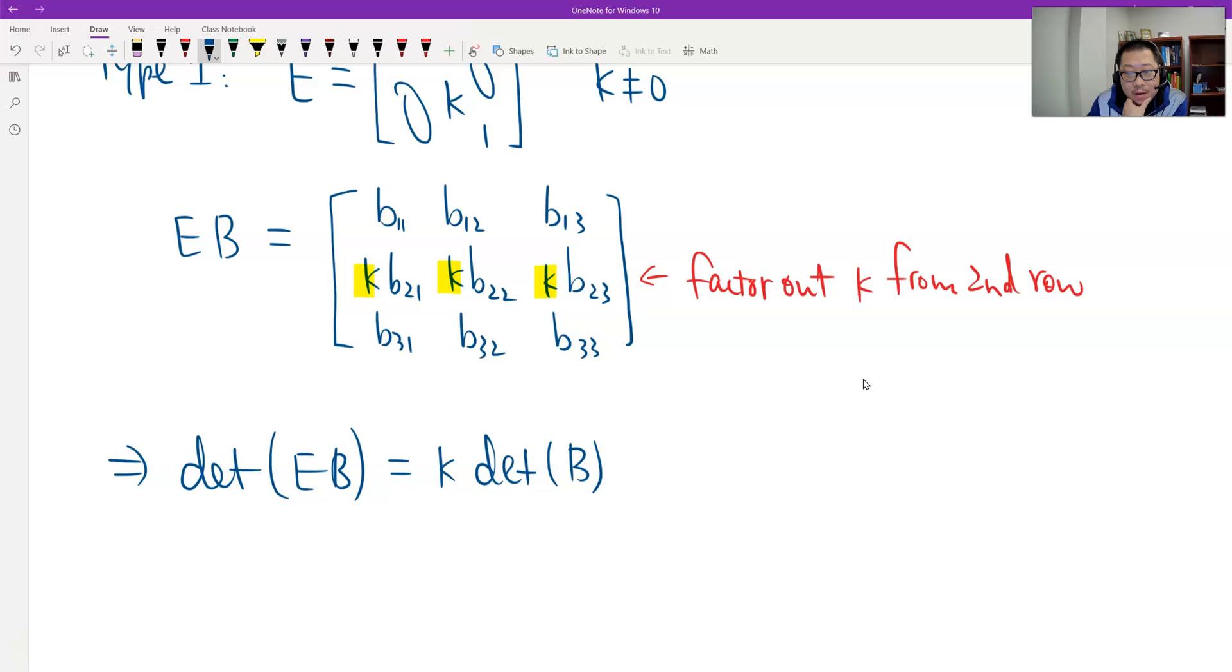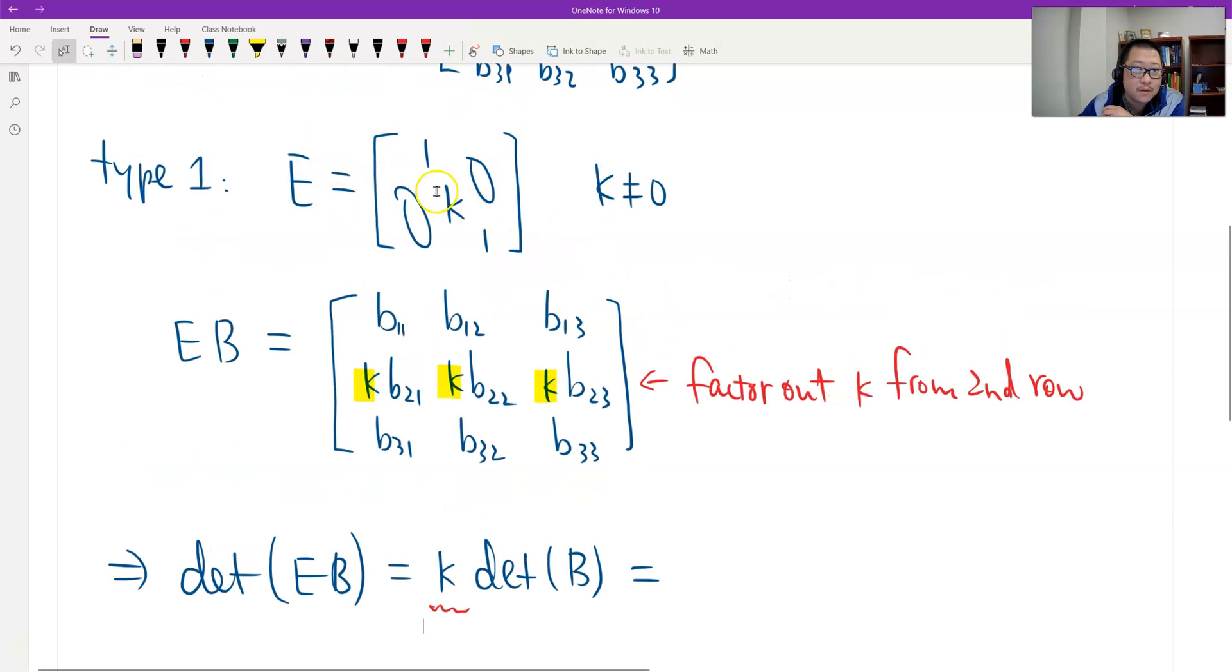Therefore, what is k? k exactly equals the determinant of E. Definitely, it is equal to the determinant of E. These two are the same. So times the determinant of B. See? That's the result. That's the first case.